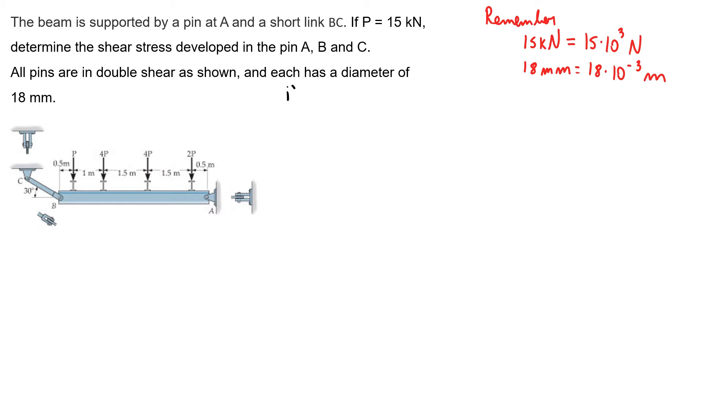So first let's start with our free body diagram. I'll start with B and then go into A. Place my force P, so here's P. 4P, 4P, 4P, 2P. You have a distance 0.5 meters, 1.5, 1.5, 1, and 0.5.